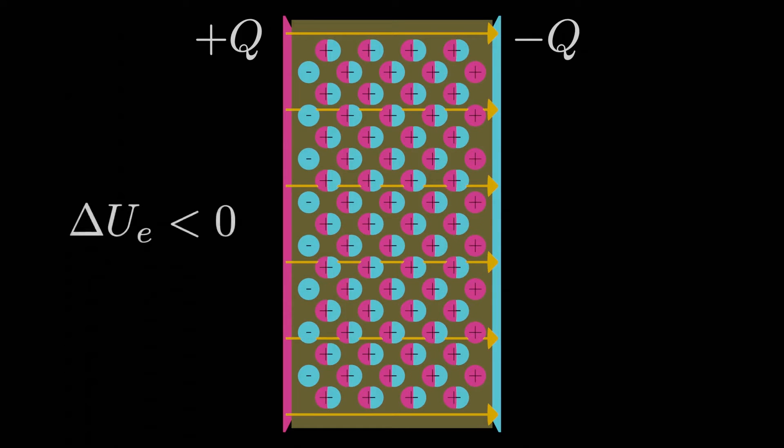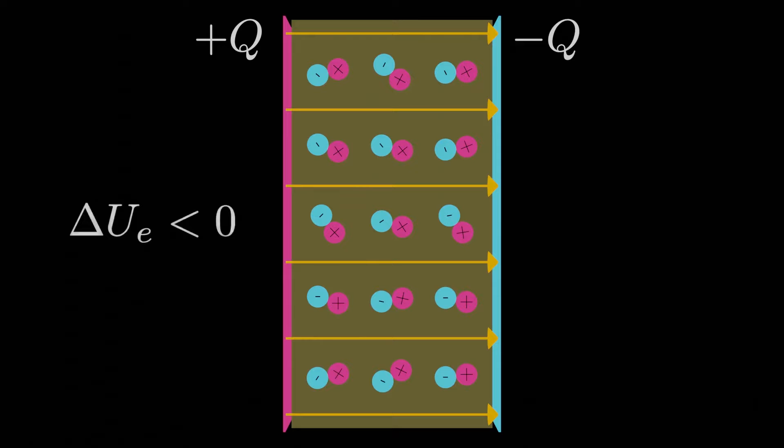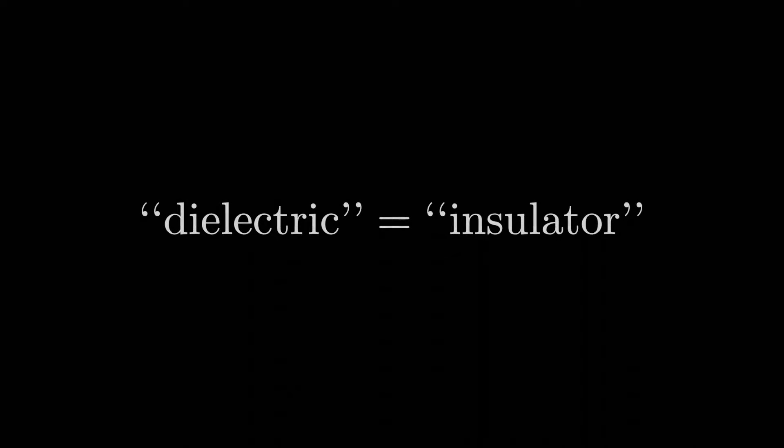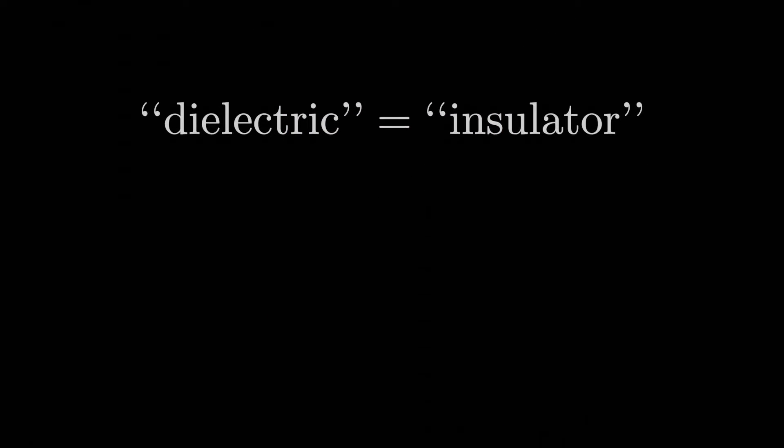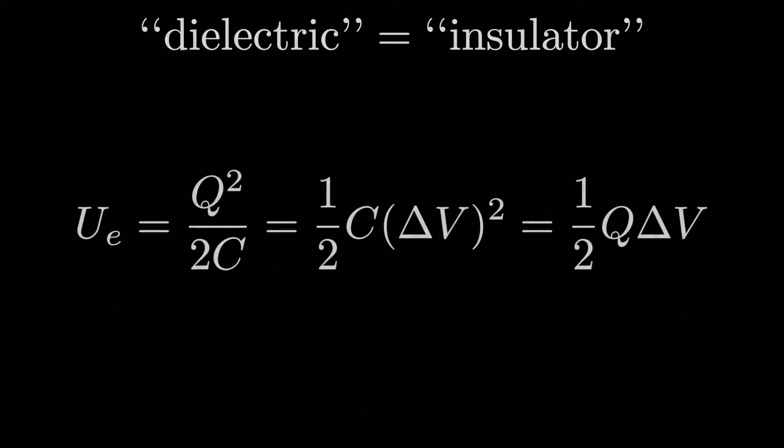So we see that, no matter what, introducing the insulating block has the effect of reducing the electric potential energy of the capacitor system. Now, how are we supposed to explain this? This gives us a good chance to introduce what a dielectric is. A dielectric is just a fancy way of describing an insulator, usually used in the context of capacitors — when we insert insulating material between the conductors that make up a capacitor. The electric potential energy of the capacitor system can be written using three expressions before we introduce the dielectric.